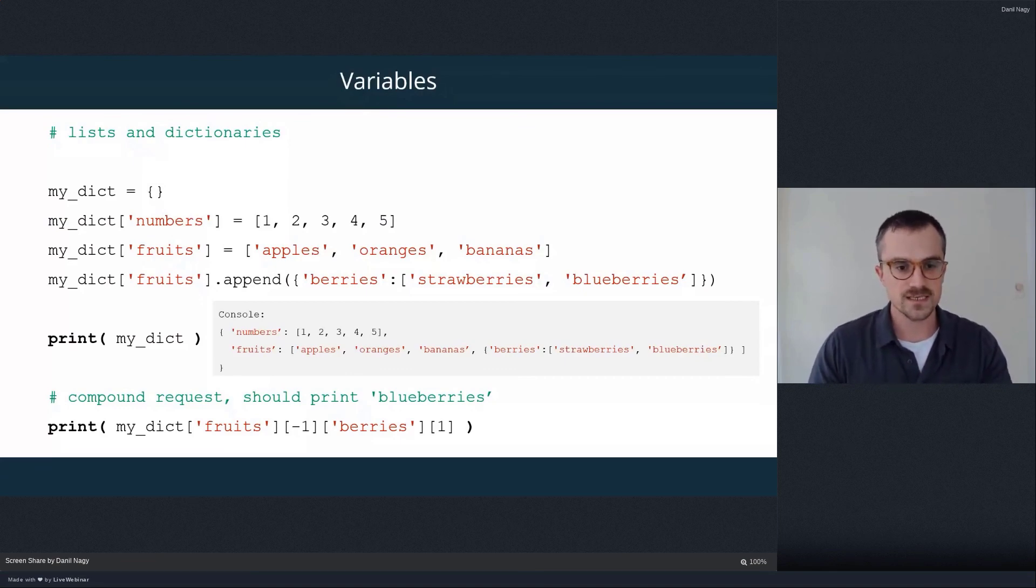So if you try this in the Python interpreter, you can first access the fruits key. That'll give you this whole list. Now we're going to pull an item from the list. And when we put a negative index as our index into the list, it actually starts counting from the back of the list. So negative one will return the last element from this list that's contained in the fruits key.